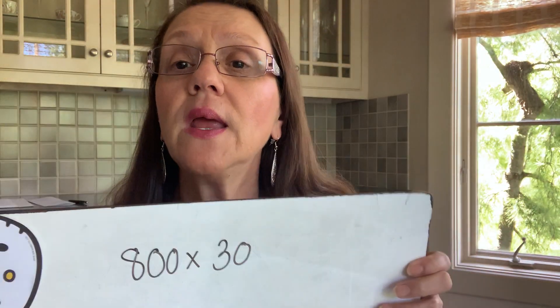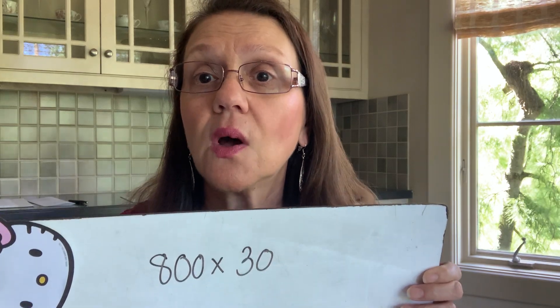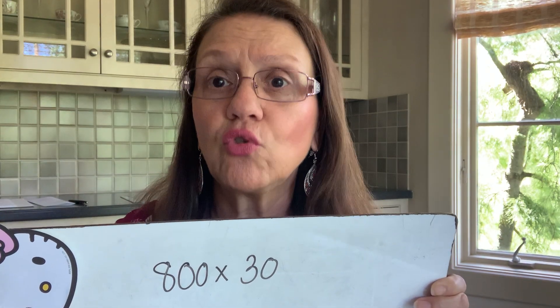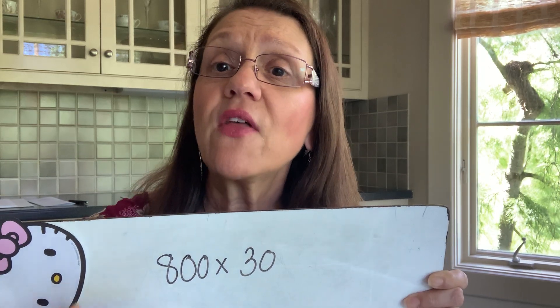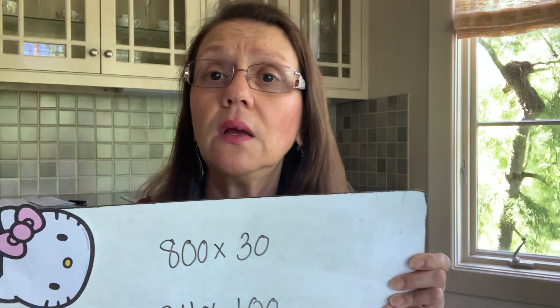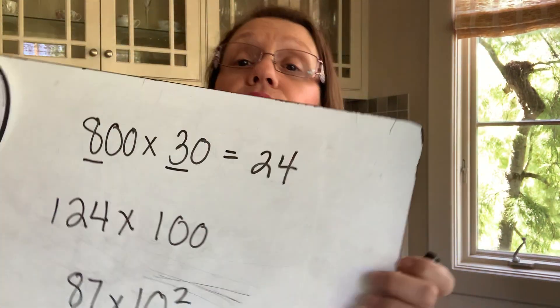So when you have a multiplication question, the first thing you should look at is: do I have multiples of ten as my factors? A multiple of ten means the factor has zeros at the end. For example, 800 times 30. The easy way to do this is use the tens trick. First step: find the math fact in this question. The math fact here is 8 times 3. So we write down and underline the math fact — 8 times 3 is 24.